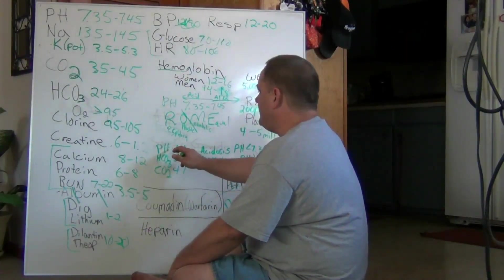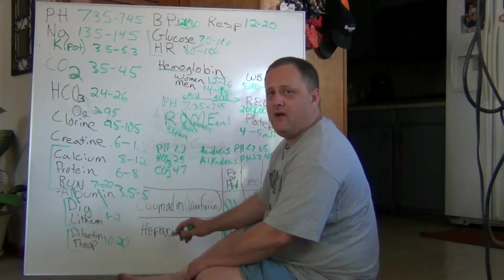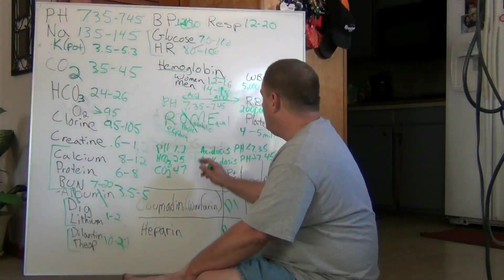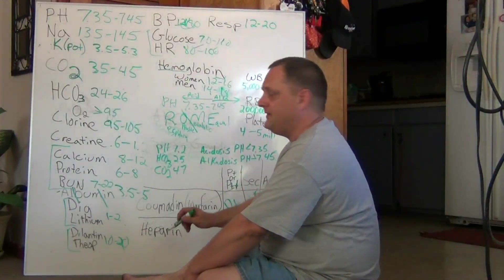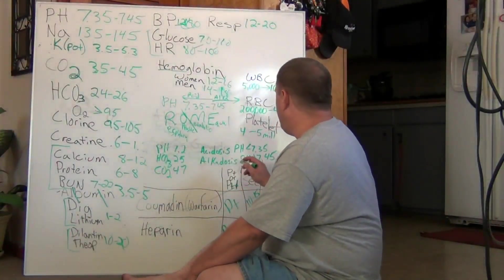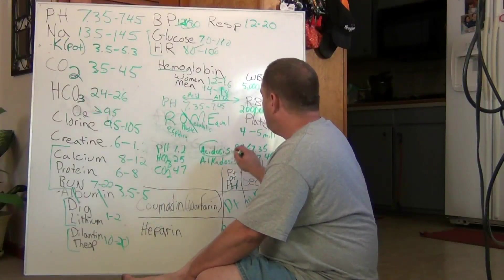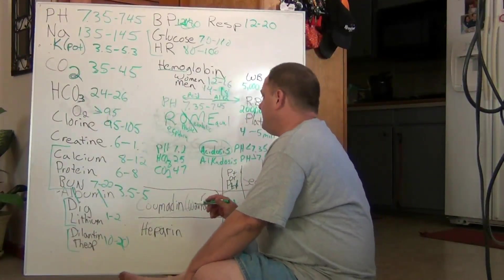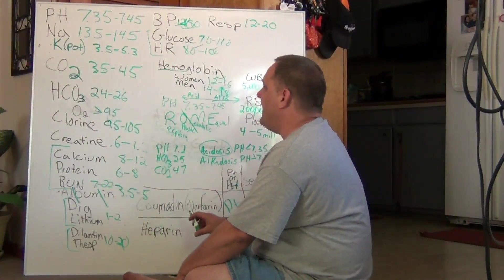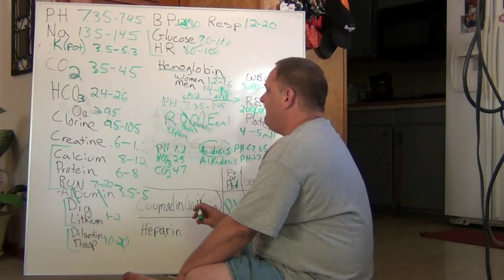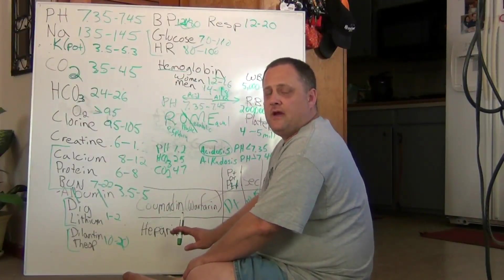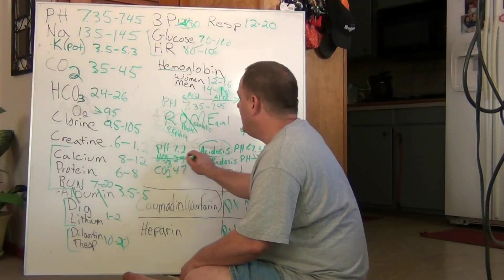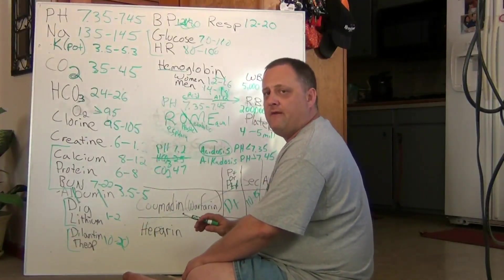Now, let's take a look at this. The pH is 7.2. Does that fall within our normal range? No, it does not. Is this acidosis or alkalosis? Now, this particular one will be acidosis because it falls below 7.35. Let's take a look at the HCO3 count. Is this value between this standard range? Yes, it is. So, we're going to leave it alone. That's normal. We'll just discard that for a second.